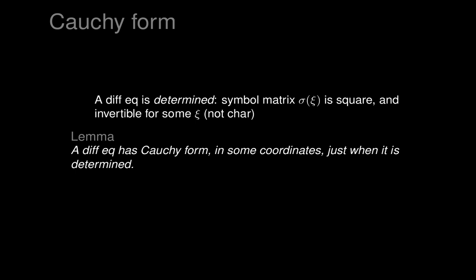This lemma explains how to find whether or not Cauchy form is available without knowing what those coordinates are. If xi is non-characteristic, you can write it as equal to dt for some function t at least at some point, and then that t will be the coordinate function in which the equation has Cauchy form. We're only really interested in the first-order case, though higher order equations can be dealt with by treating them as systems of first-order equations.